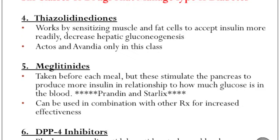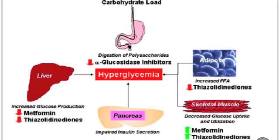Meglitinides are taken before meals and they stimulate the pancreas to produce more insulin in relationship to how much glucose is in the blood. Examples include Prandin and Starlix. They can be used in combination with other diabetes medications. The final class is DPP-4 inhibitors, which work by blocking the enzyme dipeptidyl peptidase to lower blood glucose.